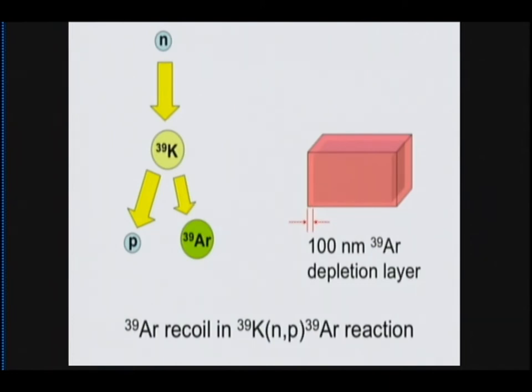Remember the ratio that we measure, argon-40 over argon-39? So if we lose argon-39, that ratio increases. So what does that do for the age? It increases. So we can cause too old ages by this phenomenon.